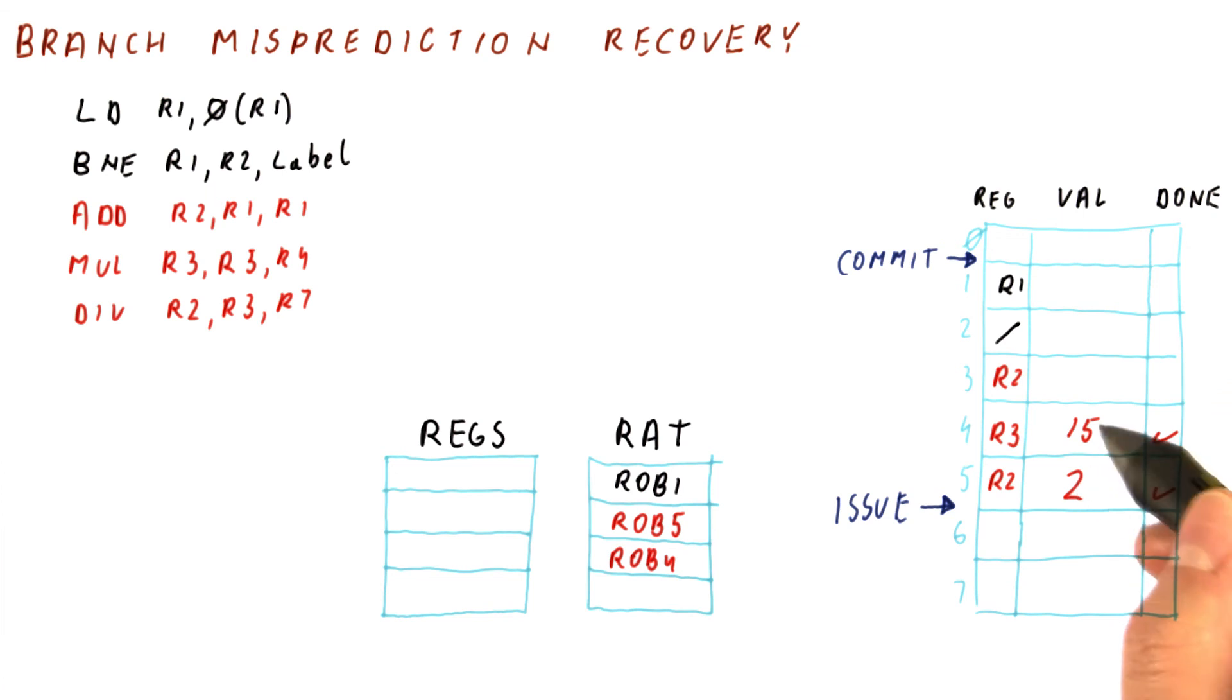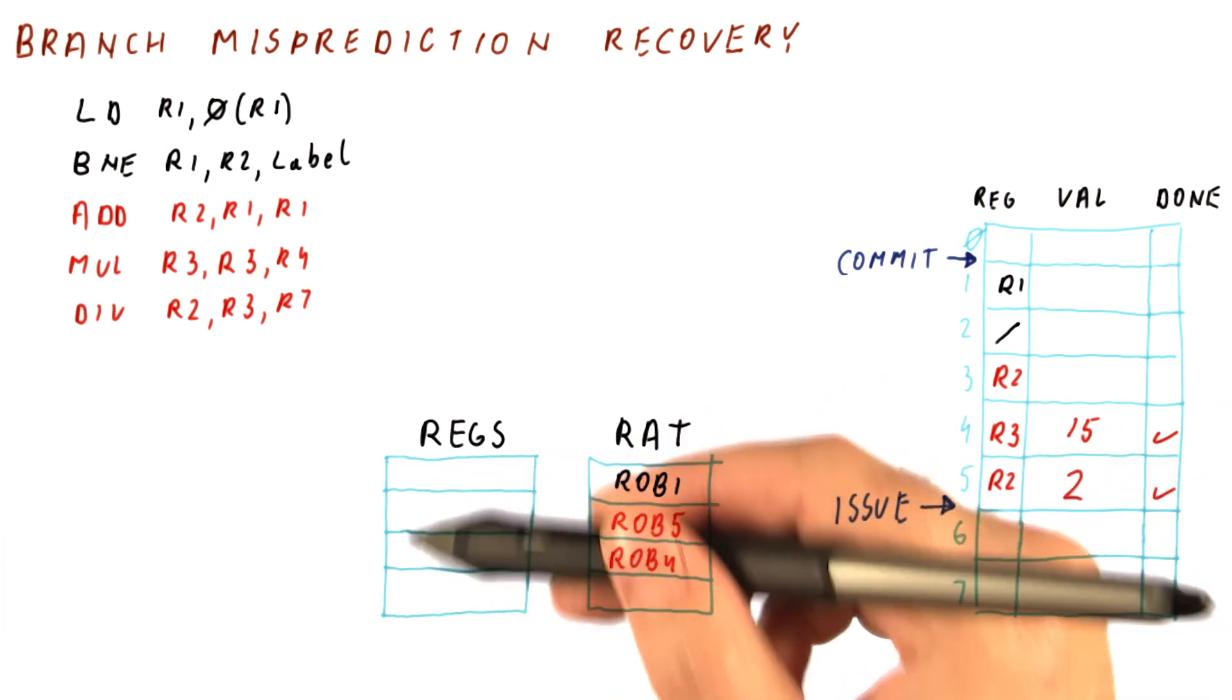But in a ROB-based processor, all they did is update the ROB entries. The registers are still unmodified.